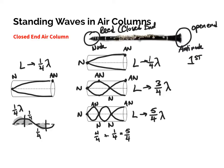What's interesting about closed-end air columns is the pattern they follow — going from one quarter to three quarters, skipping the halves and full wavelengths. In a closed air column, you do not have the even harmonics. The first standing wave is the first harmonic, the second is the third harmonic, and the third is the fifth harmonic. So for a closed-end air column, you will only have the odd number harmonics — we skip the even number harmonics. This limits the types of sounds we can create compared to an open-end air column.